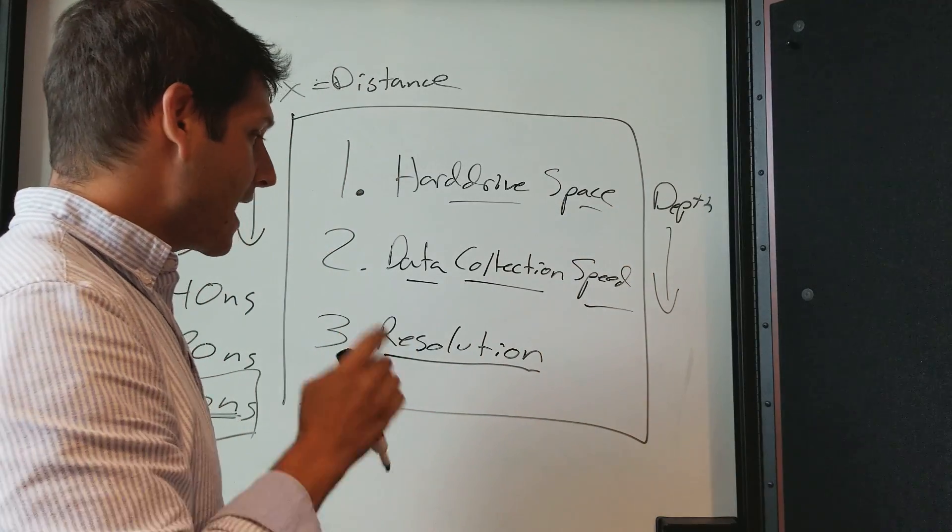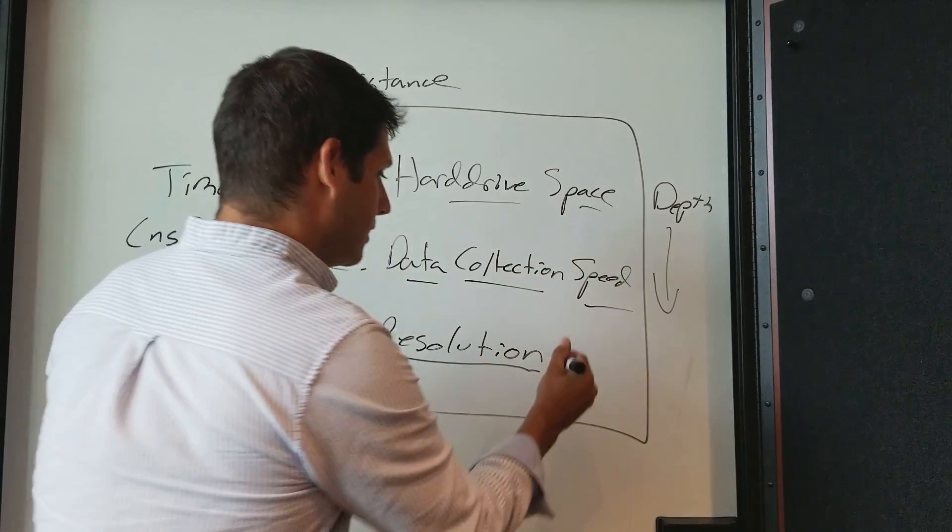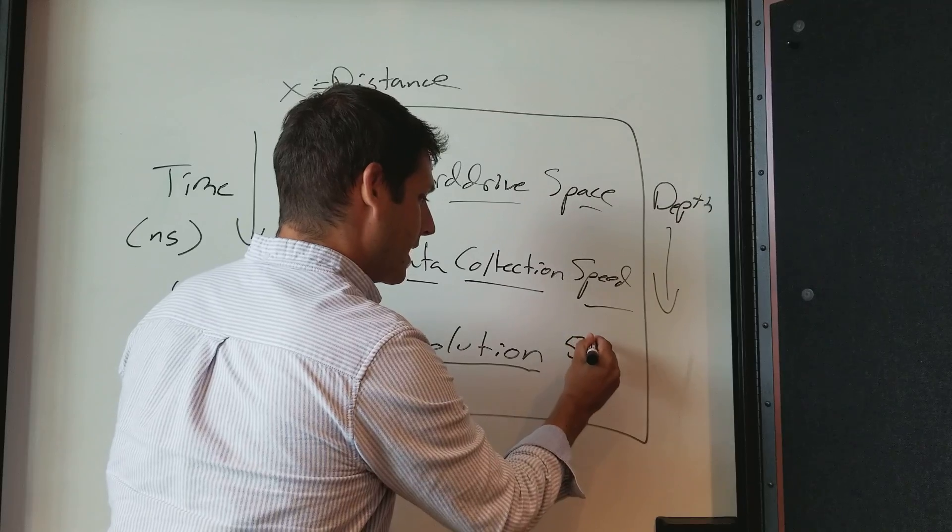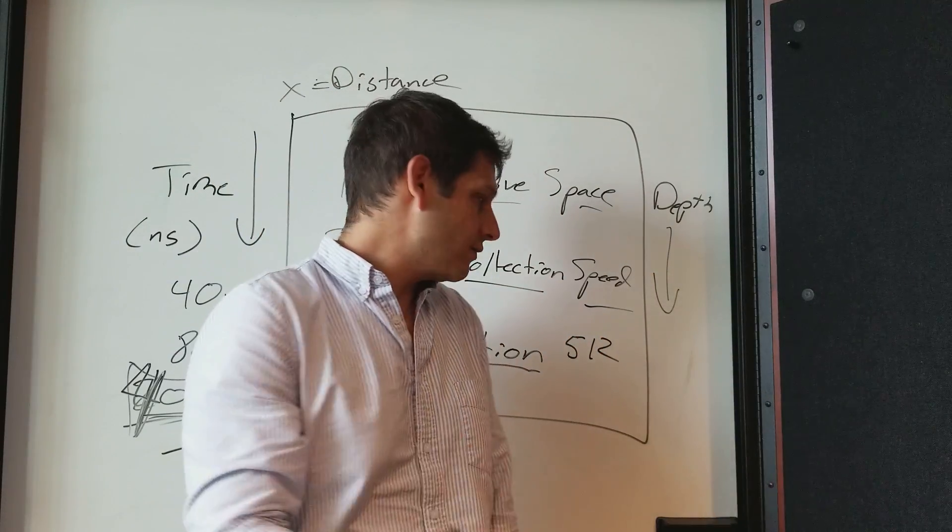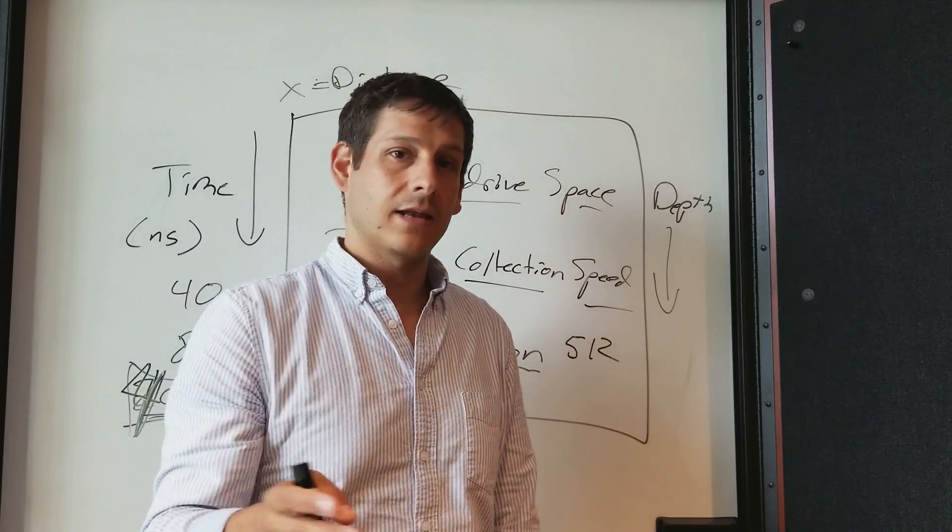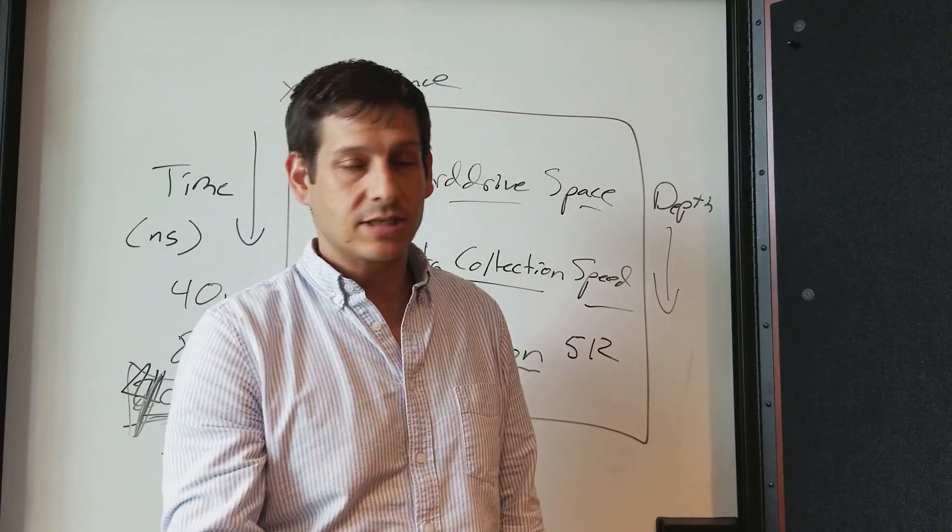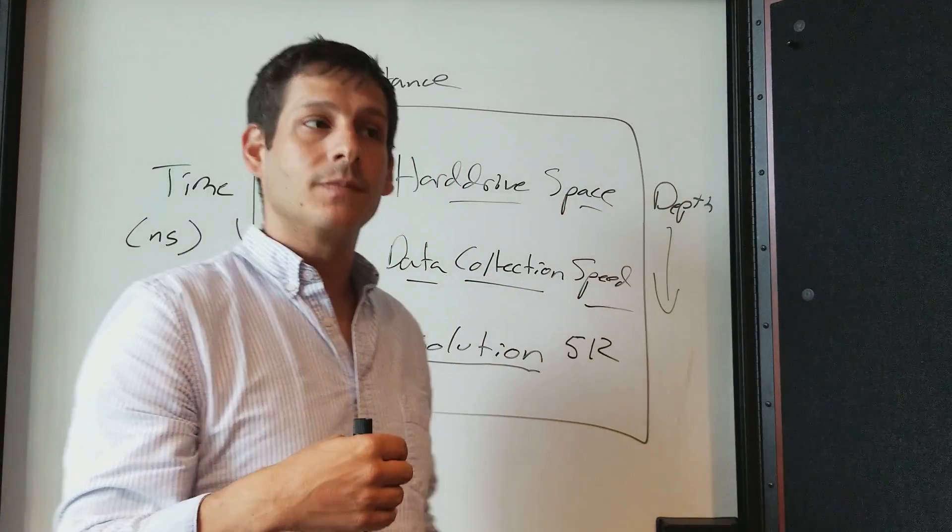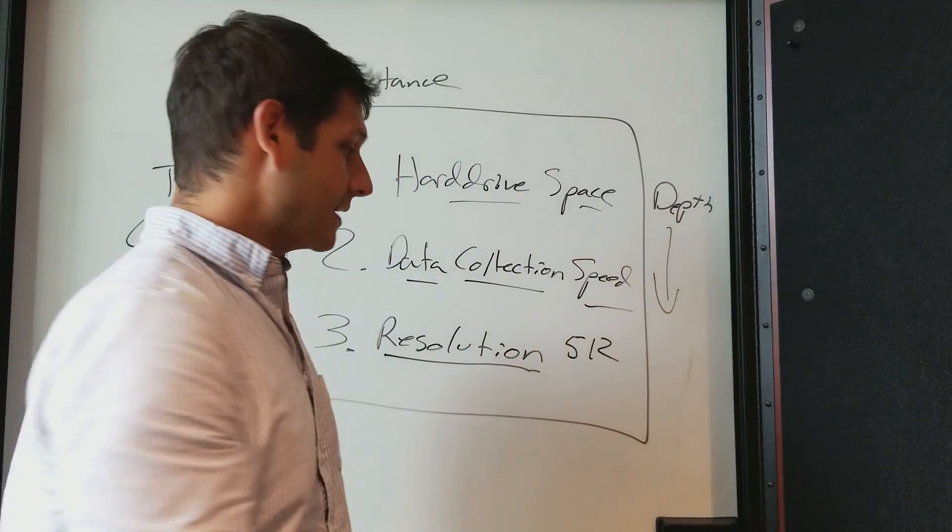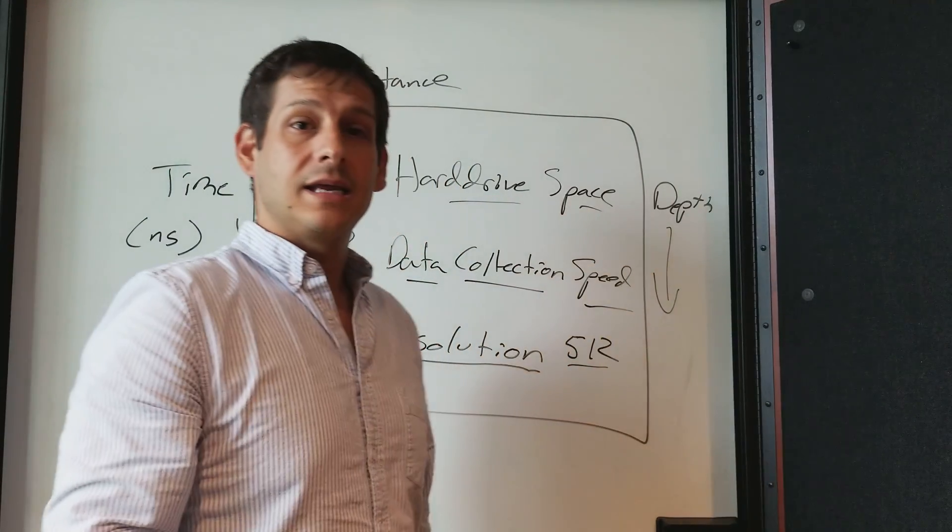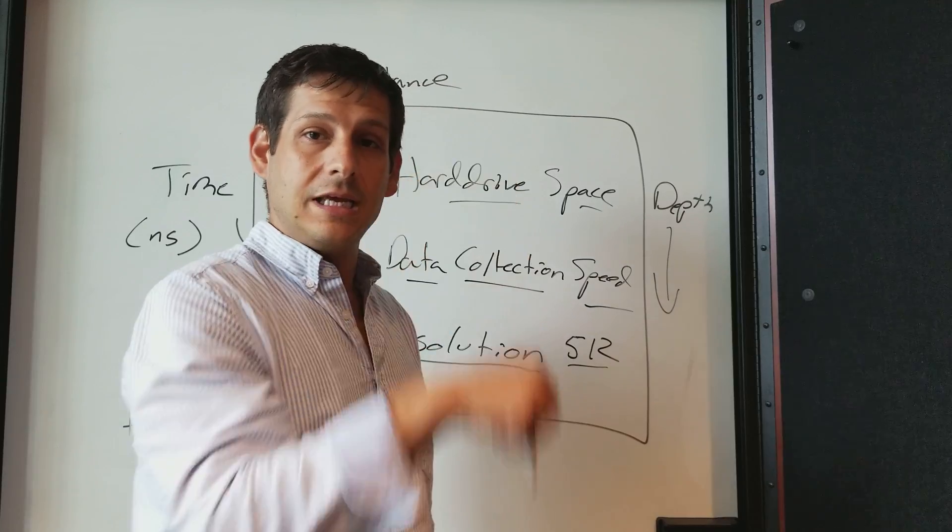Let's say that you input into your system that you want 512 samples per scan. A scan is like a trace, these terms are interchangeable, but 512 samples per scan. That's how many points will be digitized in each of your scans or traces.